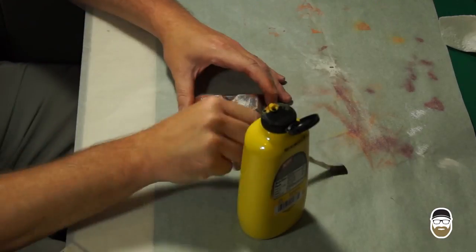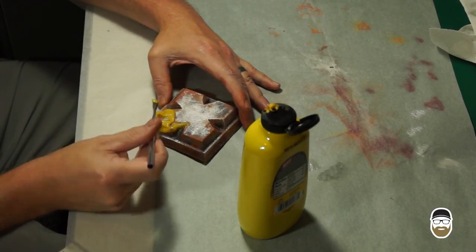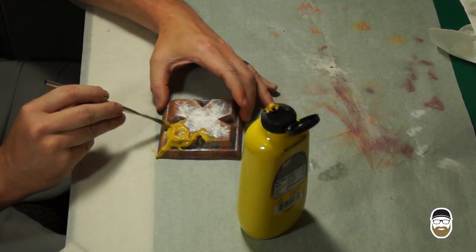Now for the messy part. Pull out the mustard and apply it thick where you want the metal and rust to show through. If you put it on too thin with a brush, the paint will not come off.